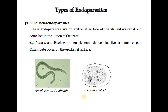There are different types of endoparasites. The first type is superficial endoparasites, which live on the epithelial surface of the alimentary canal or in the lumen of the tract. Examples include Ascaris and hookworm, Ancylostoma duodenale, which lives in the lumen of the gut, and Entamoeba, which occurs on the epithelial surface.